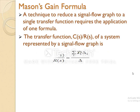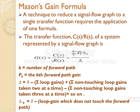First, we will recollect Mason's gain formula, which we have already discussed in the previous lecture. Mason's gain formula is mainly used to find out the transfer function of the given system. The given system may be represented in a block diagram or in a signal flow graph. The transfer function C(s)/R(s) is summation of k: T_k·Δ_k divided by Δ, where k is the number of forward paths, T_k is the k-th forward path gain. Δ is 1 minus sum of all loop gains, plus sum of two non-touching loop gains, minus sum of three non-touching loop gains, and so on. Δ_k is 1 minus the loop gains which do not touch the k-th forward path.